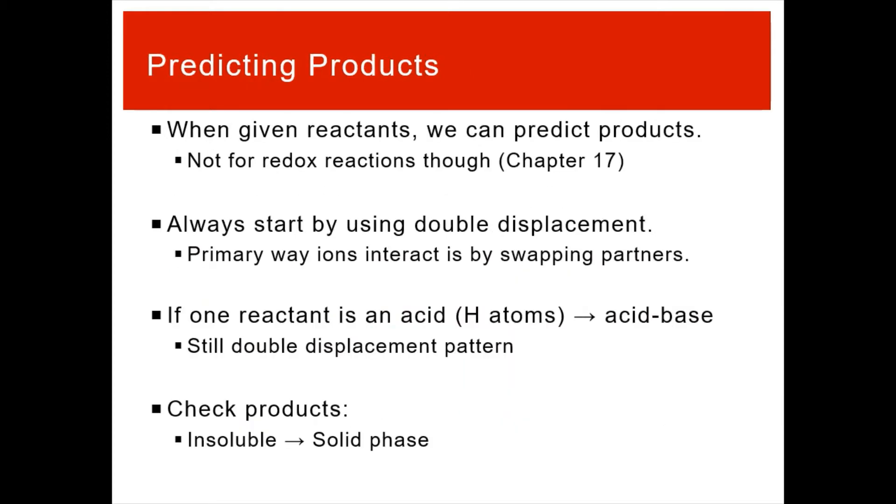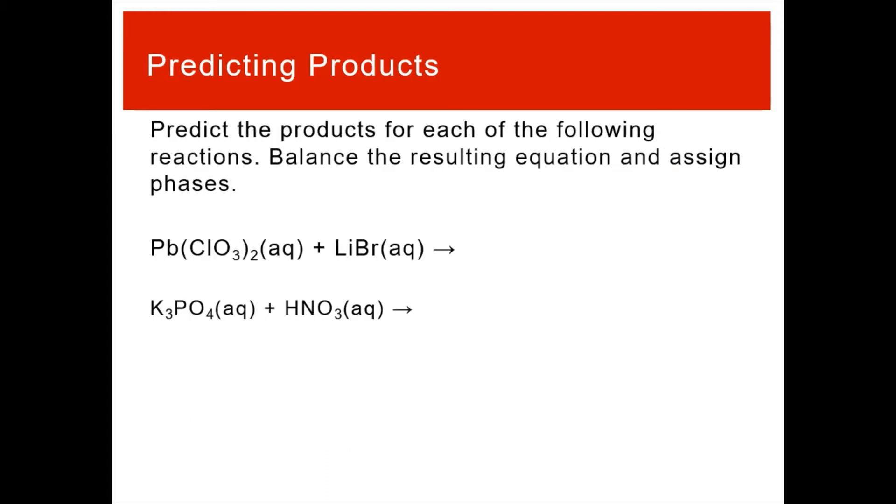So what we also want to be able to do is predict products. When given reactants, can you predict the products without doing the reaction? Again, not for redox quite yet. Come back for Gen Chem 2, chapter 17. But the idea here is if they follow a double displacement, you can use that double displacement pattern. Swap ions, swipe the H+. Is it an acid base? Figure it out, and then just check your products. If it's insoluble, it turns into a solid phase. If it's water, it gets a liquid. Balancing, also very important in this. But we're going to be able to predict products.